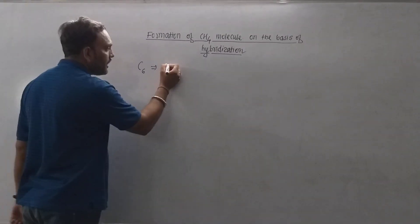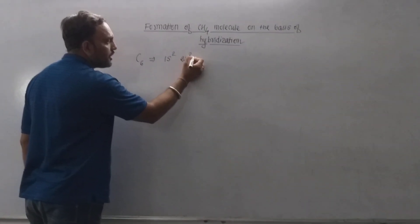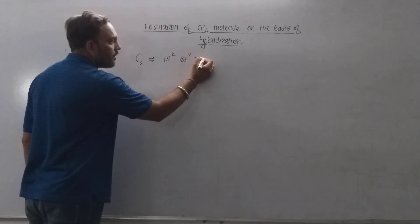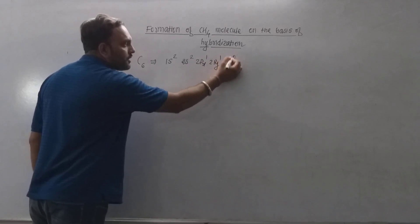Its electronic configuration in ground state can be written as 1s², 2s², 2px¹, 2py¹, 2pz⁰.